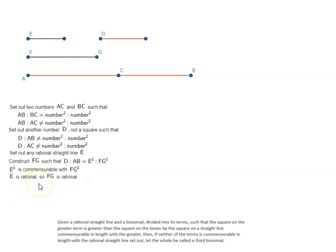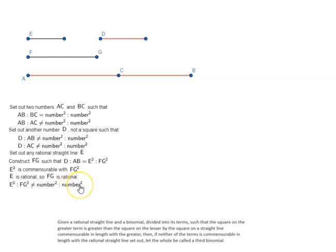Now E is rational, so FG is also rational. But E square is to FG square does not have a ratio that a number square has to a number square, because D is to AB does not have that ratio. That means E is incommensurable in length with FG.